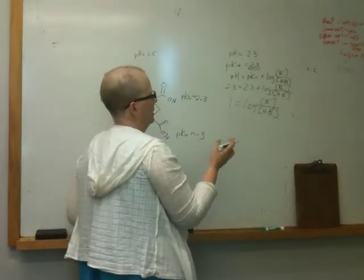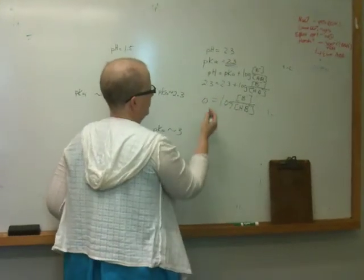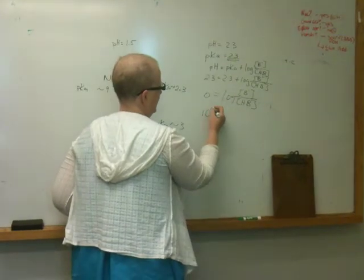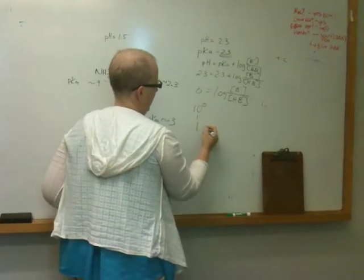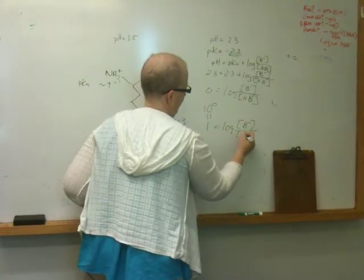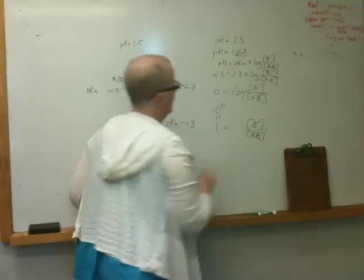0 will equal the log of B minus over HB. We went over this in class and we talked about what this means. So what does this mean? You take the anti-log or the inverse log. So 10 to the 0 equals 1. So 1 equals B minus over HB.